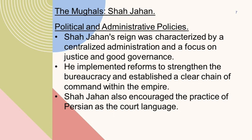Shah Jahan's reign was characterized by a centralized administration and a focus on justice and good governance. He implemented reforms to strengthen the bureaucracy and established a clear chain of command within the empire. Shah Jahan also encouraged the practice of Persian as the court language.